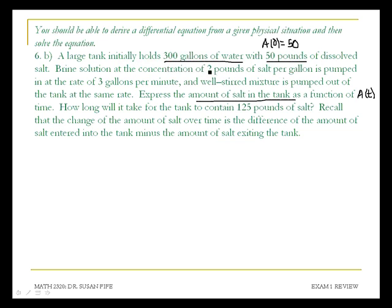We have a brine solution that contains 2 pounds of salt per gallon being pumped in at a rate of 3 gallons per minute. So let me draw just a quick little graph. Here's my tank. It has 300 gallons of water, 50 pounds of salt. Into the tank I've got 2 pounds per gallon coming in at a rate of 3 gallons per minute.